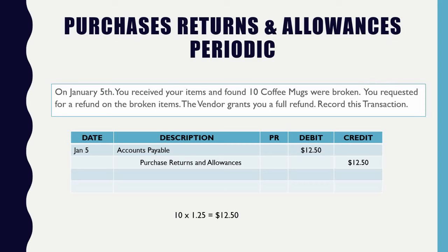Because we're using the contra account Purchase Returns and Allowances, which is a contra account to purchase expense, it must be credited by $12.50. Then accounts payable is debited. The bill is now going to reflect that you only purchased 90 cups instead of 100, because you returned 10.